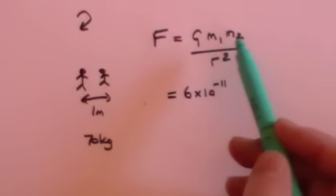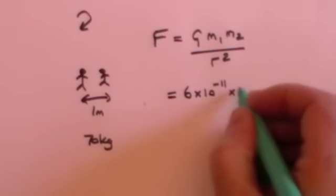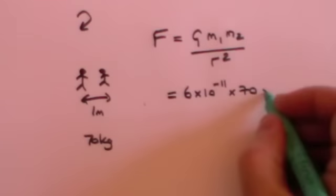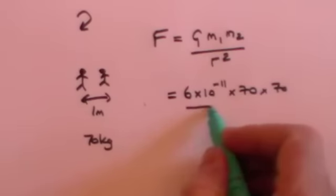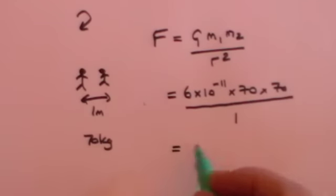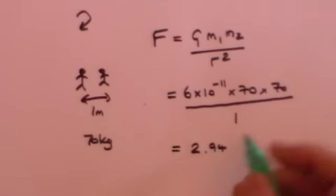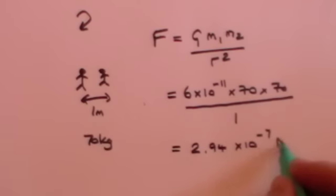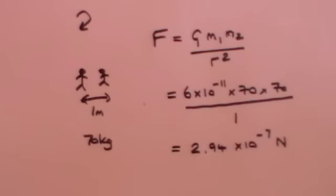We multiply that by the mass of one body, which is 70 kilograms, times the mass of the other body, which is 70 kilograms, divided by the distance between them squared. They are one metre apart, so one squared is one. If you get your calculator out, I think you'll find that comes to 2.94 times 10 to the minus 7 newtons as the force operating between two people each having a mass of 70 kilograms standing one metre apart. That looks like a pretty small number — 10 to the minus 7. Let's just see how small that force actually is.